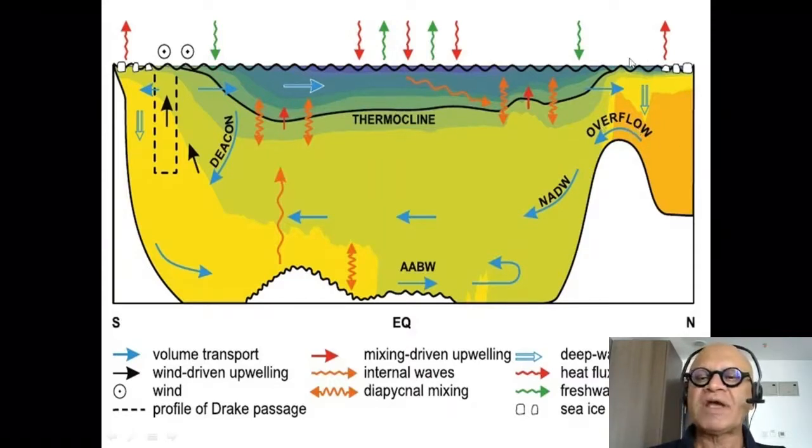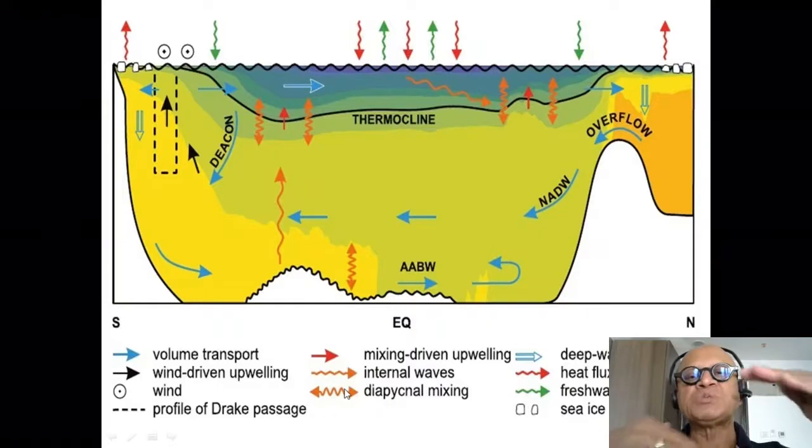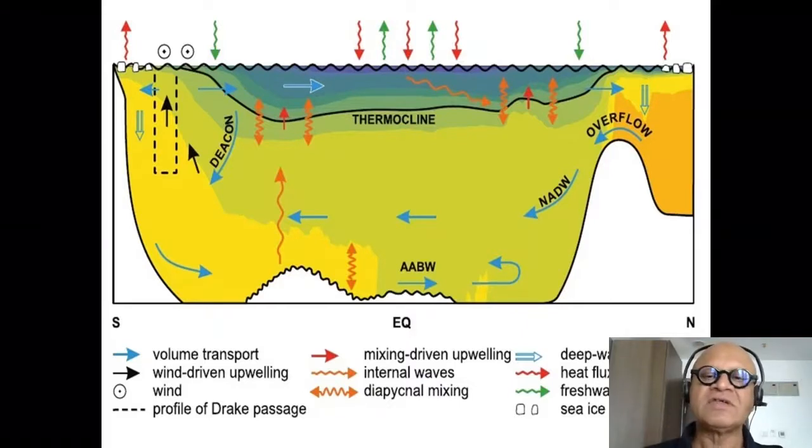And there are topographic impacts where the overflow of the North Atlantic deep water happens and so on. So mixing driven upwelling, internal waves, diapycnal mixing, which means the mixing across the interface of two isopycnals. That flux is very small, but it's very critical for water mass conversion. To change ice densities from heavier to lighter or from lighter to heavier is the diapycnal mixing, which is very critical.